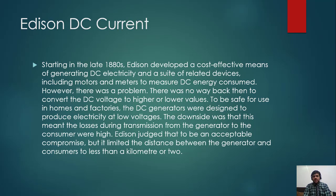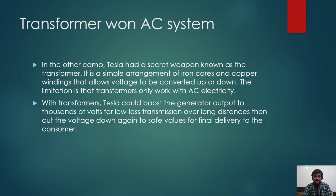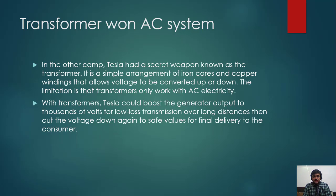At the end, Edison was convinced that the DC system had limitations, and the transformer won for AC. In the other camp, Tesla had a secret weapon known as the transformer — a simple arrangement of iron cores and copper windings that allow voltage to be converted up or down. The limitation is that the transformer only works with AC electricity, and that is why Tesla won.